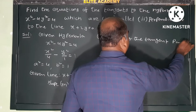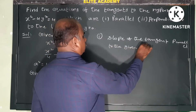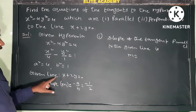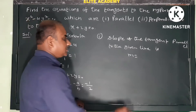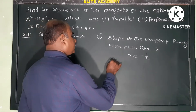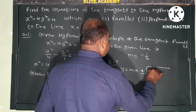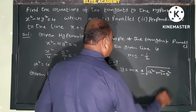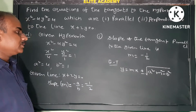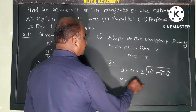For the tangent parallel to the given line, parallel lines have equal slopes. The formula for the equation of tangent in slope form is y equals mx plus or minus square root of a squared m squared minus b squared. So we substitute the slope m equals minus 1 by 2 along with the a squared and b squared values.